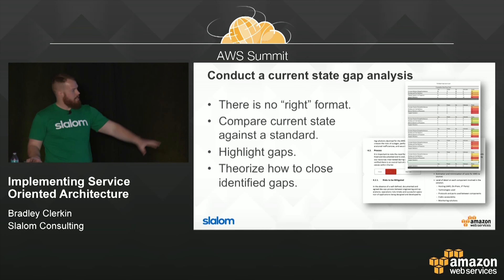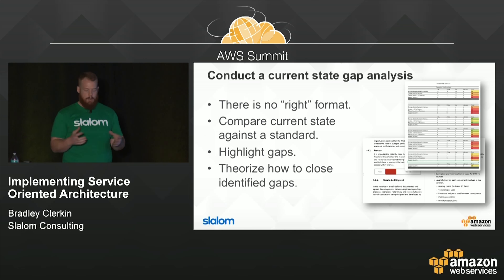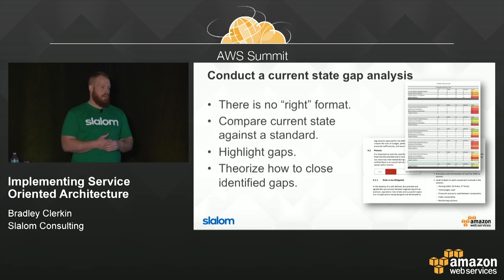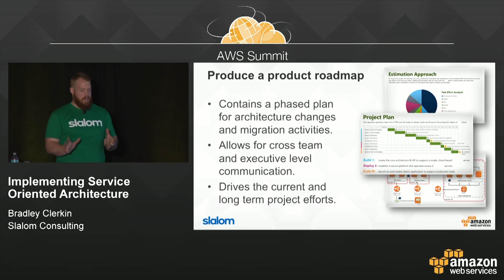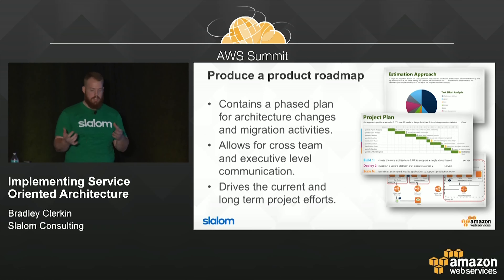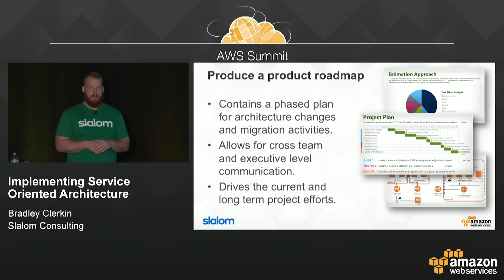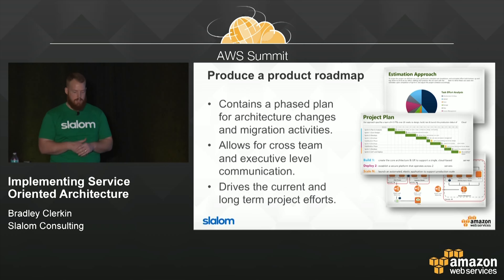The current state gap analysis compares current state against the standard, highlights where your biggest gaps are, and theorizes how to close those gaps — likely with architecture changes and bringing in new services. Once we have that gap analysis and have theorized the activities needed to close those gaps, we put those into a product roadmap. The roadmap typically contains a phase plan for architecture changes and migration activities, used for cross-team executive-level communication. One important note: always point people to the latest version — publish it to a shared location, because what you publish week one will be wrong by week eight as you learn more.